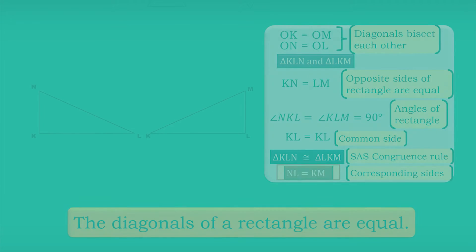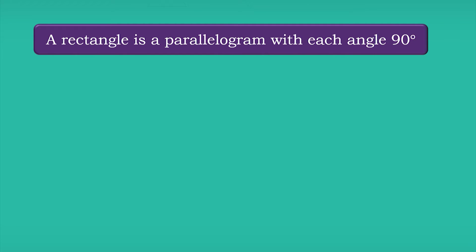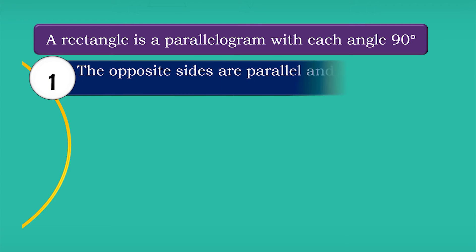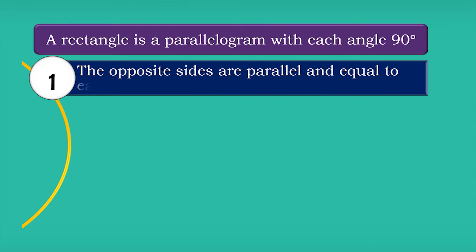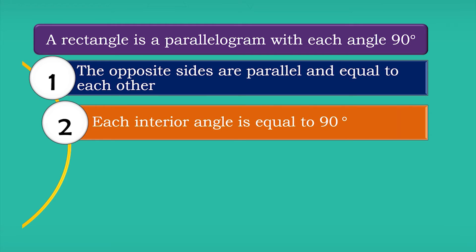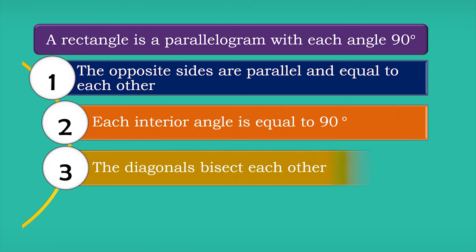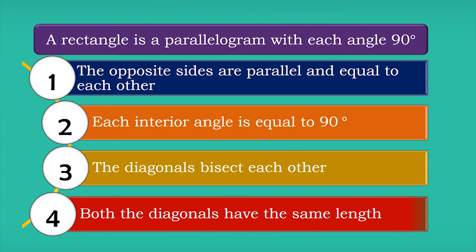Let's summarize what we learned today. A rectangle is a parallelogram with each angle equal to 90 degrees. The rectangle has the following properties: one, the opposite sides are parallel and equal to each other; two, each interior angle is equal to 90 degrees; three, the diagonals bisect each other; four, both diagonals have the same length.